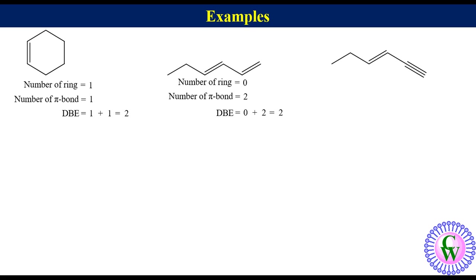Hex-3-in-1-ene. Number of ring is 0. There is 1 double bond and 1 triple bond. We know that 1 triple bond has 2 pi bonds. So number of pi bonds will be 3, so DBE will be equal to 0 plus 3 is equal to 3.